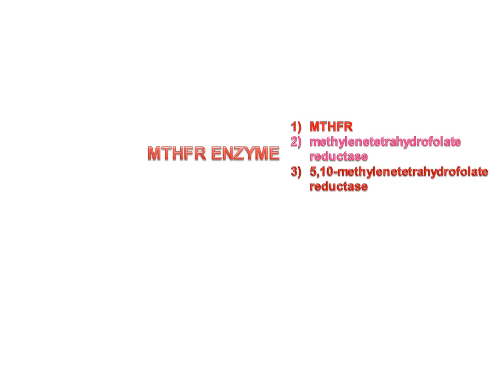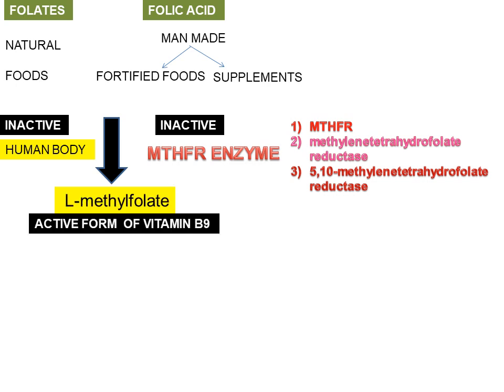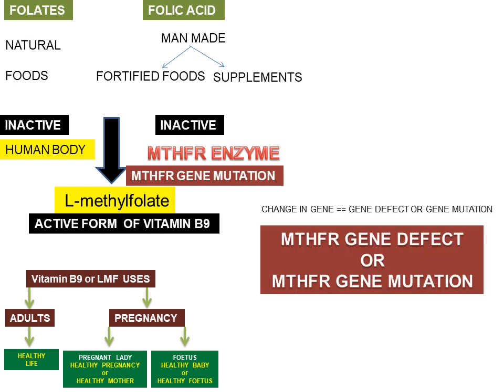MTHFR is a powerful enzyme that converts inactive food folates or inactive folic acid from fortified foods or supplements to the active form L-methylfolate. If MTHFR enzyme is formed normally in the human body, this person is healthy and can carry out all bodily functions normally. There are chances of a change in the gene — this change is called a gene defect or gene mutation. When this mutation occurs in the MTHFR gene, it is called MTHFR gene mutation.